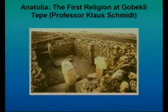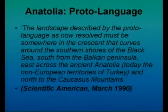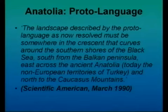Here's an article from Scientific American, March 1990. It says: 'The landscape described by the proto-language as now resolved must be somewhere in the crescent that curves around the southern shores of the Black Sea, south from the Balkan Peninsula, east across ancient Anatolia — today the non-European territories of Turkey — and north to the Caucasus Mountains.' Again, confirming the general biblical picture we have of Genesis.